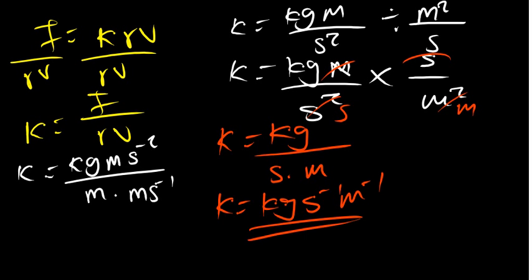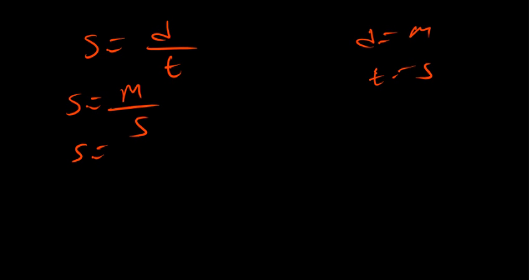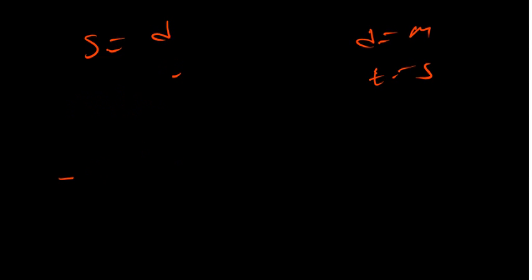Let's do a simple one: speed = distance / time. Distance is in meters (same as length) and time is in seconds. So the units of speed are m/s, which is the same as m·s⁻¹, meaning meters per second. That is basically dimensional analysis.